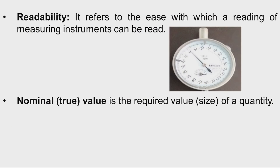Observing the diagram of a dial indicator, we can see a bigger dial and a smaller dial, a bigger pointer and a smaller pointer, with reference point zero and graduations. Each small graduation indicates 1 micrometer. We can very easily read this dial indicator, indicating that the readability of this indicator is very good.